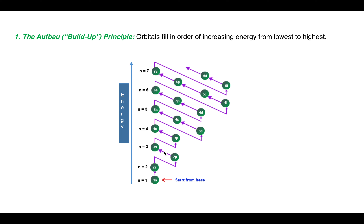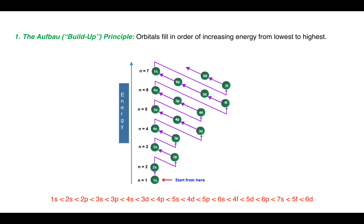Whenever electrons are to be filled up inside the orbitals, they will be following this principle. According to the Aufbau principle, the relative energies of the orbitals are: 1s is the lowest, then higher is 2s, then 2p, 3s, 3p, and so on.